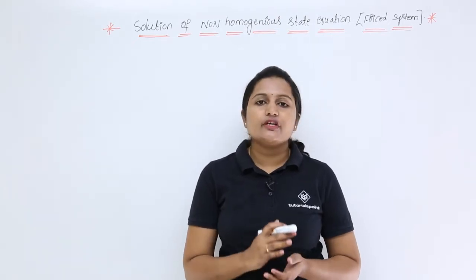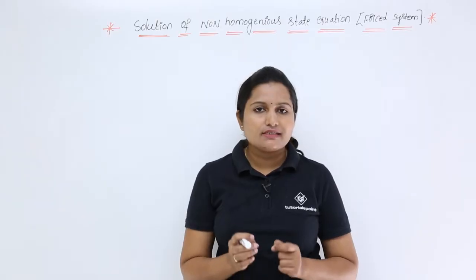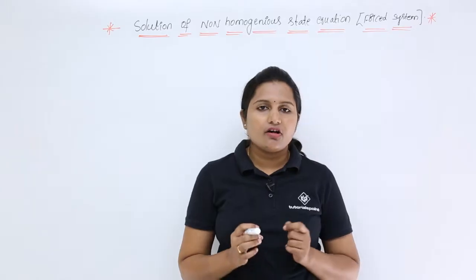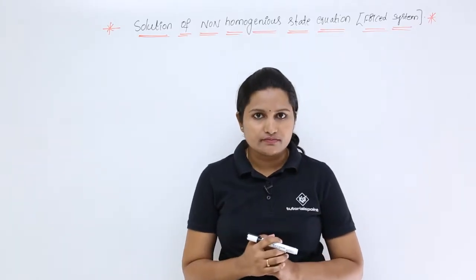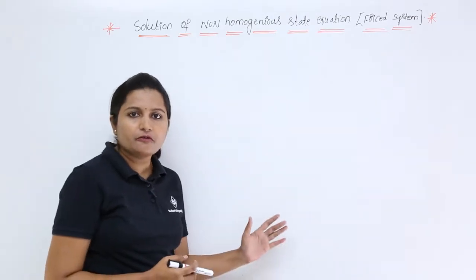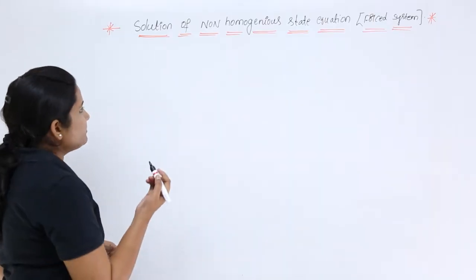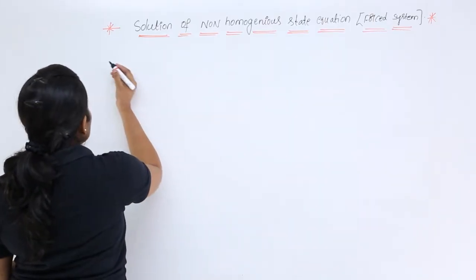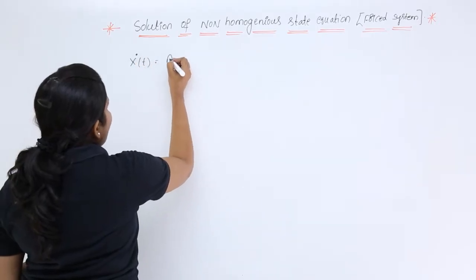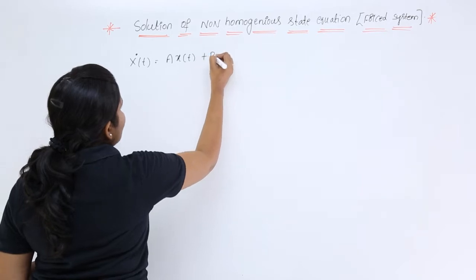In this video we are going to derive the solution for the non-homogeneous state equation, which contains the homogeneous solution along with the forced solution. For a forced system, the state equation can be written as x'(t) = A·x(t) + B·u(t).